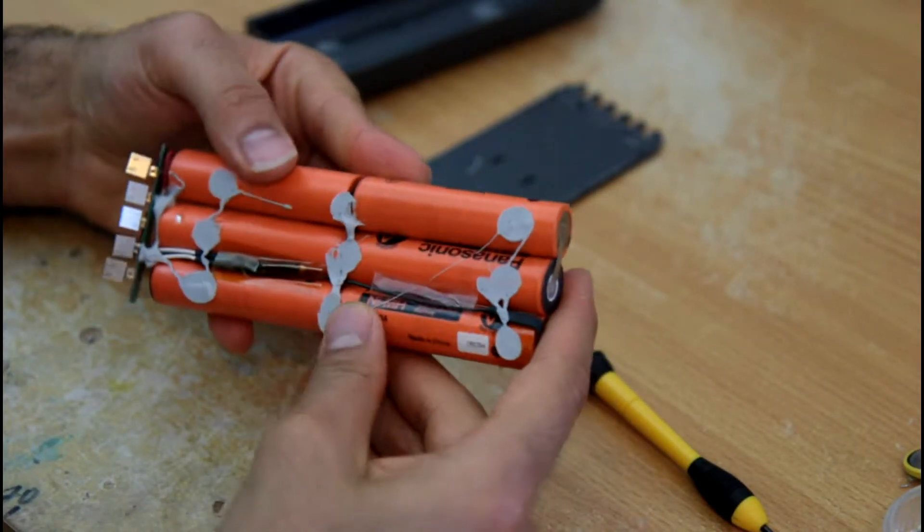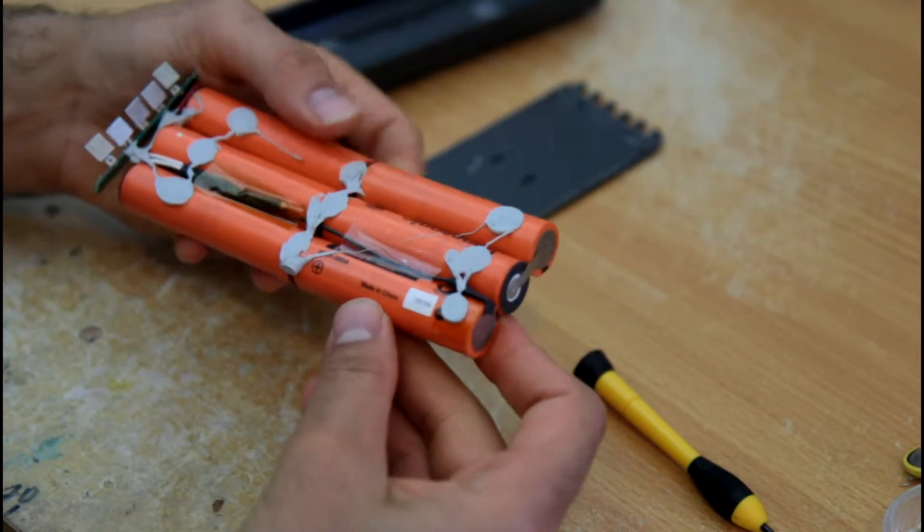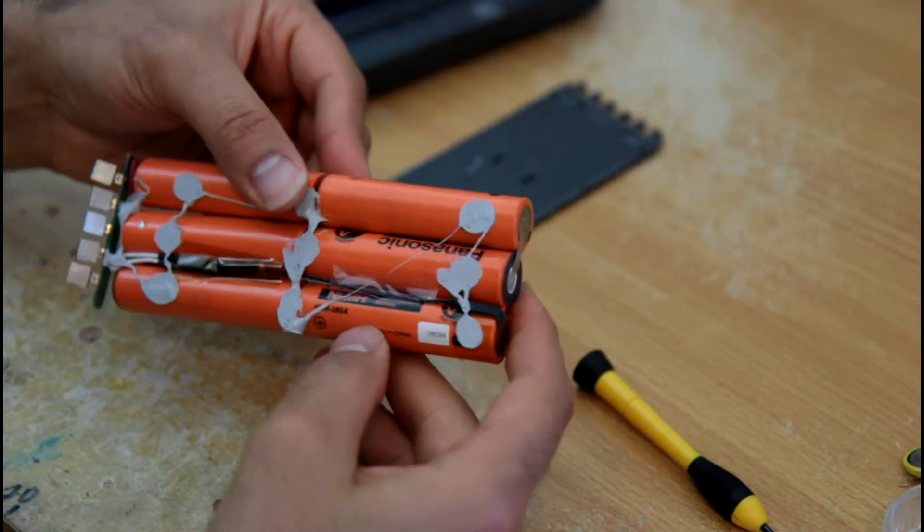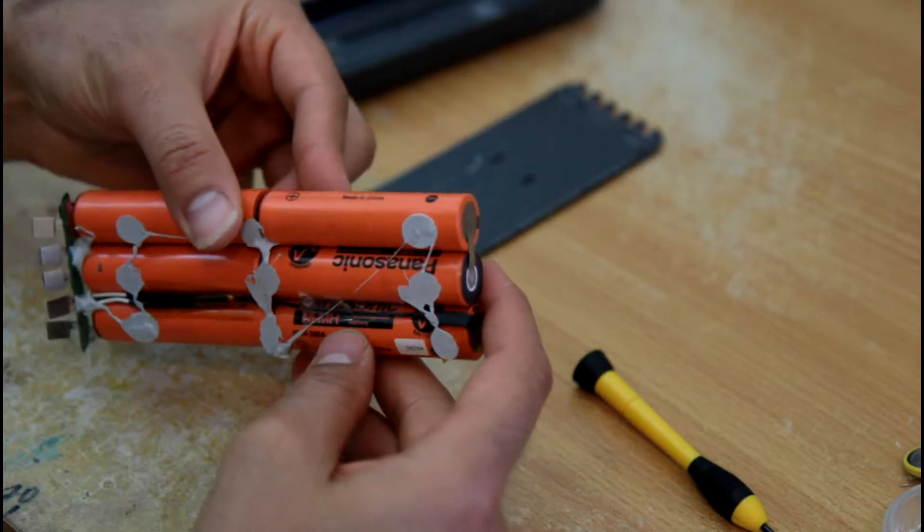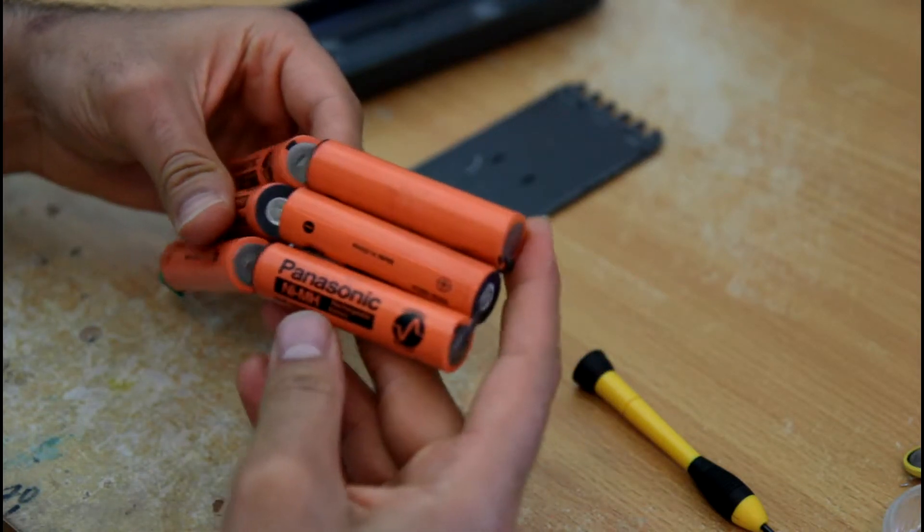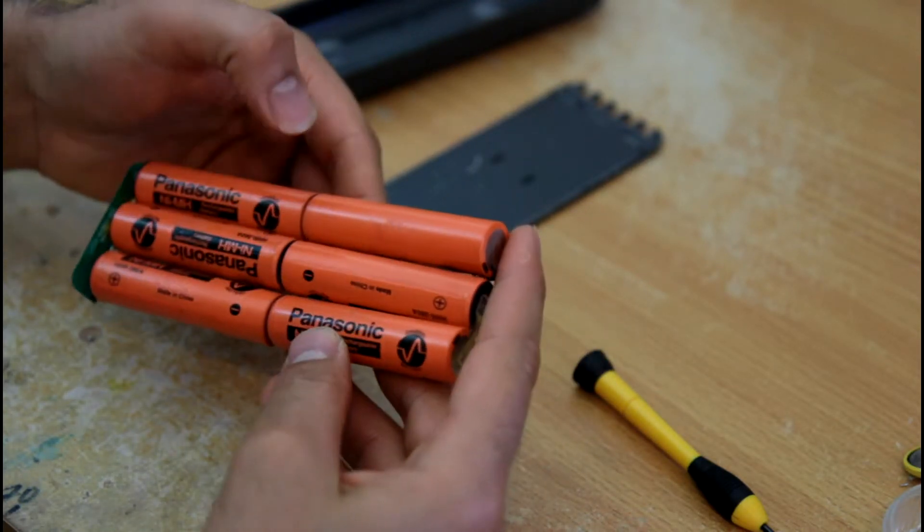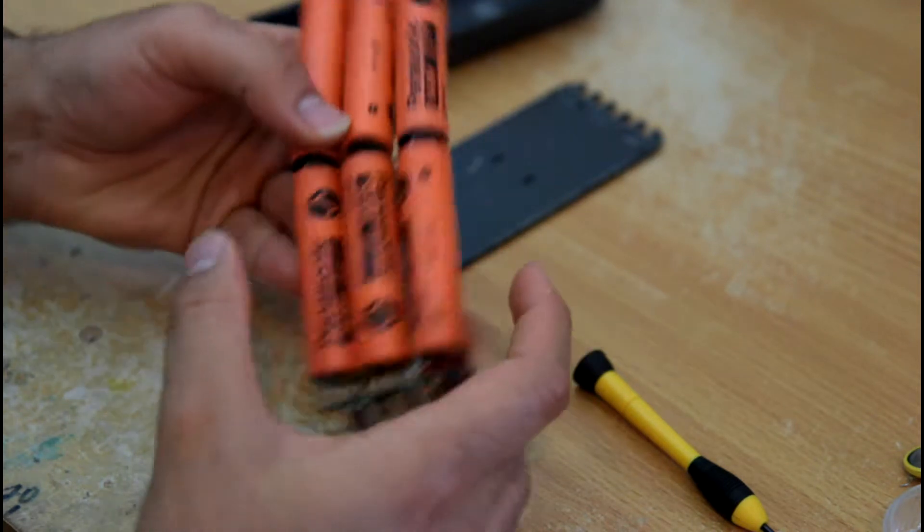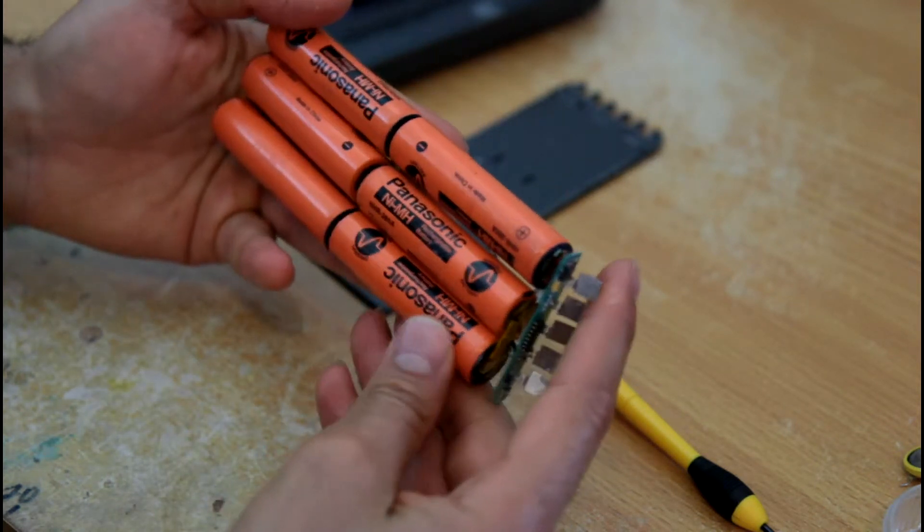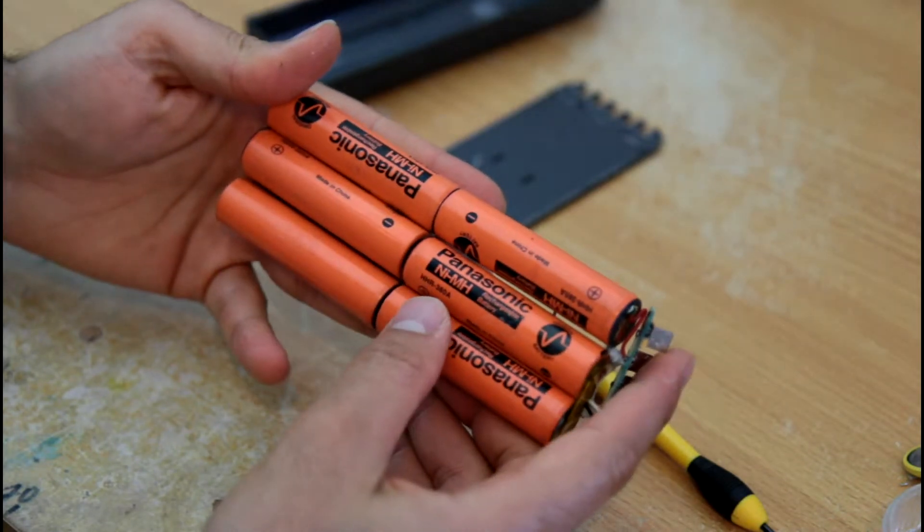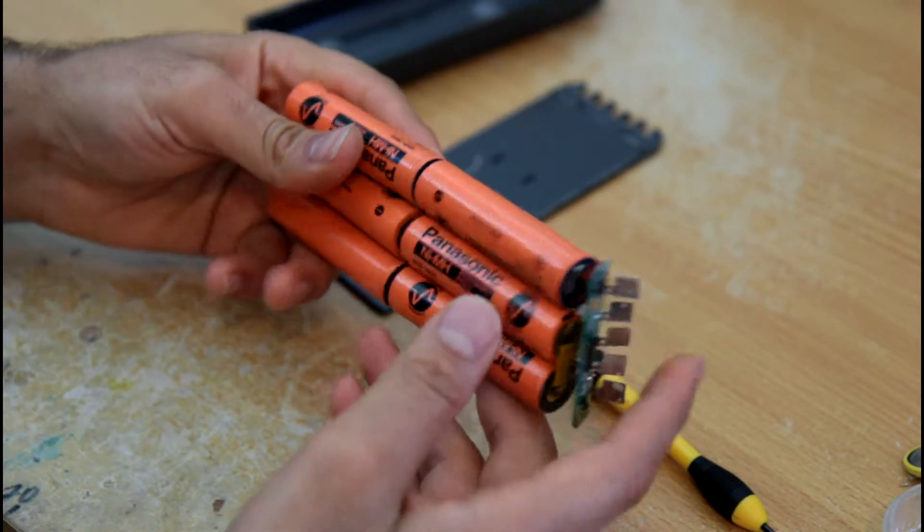So in this case, these are nickel metal hydride, and this specific one actually, this Panasonic, it says made in China which is interesting. Many of these Panasonic batteries are Japanese. This one is Chinese and it's WHR380A, that's the model.